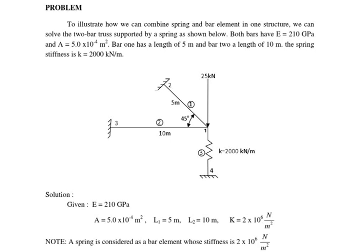Here we are going to solve a truss problem. This is a special case because there are two bar elements along with a spring element. For both bar elements, the Young's modulus and area are the same, but the lengths are different. For bar 1 it is 5 meters and for bar 2 it is 10 meters. The spring stiffness is given as k = 2000 kilonewton per meter. We need to find deflections, stresses, and other structural data.